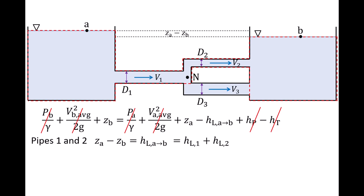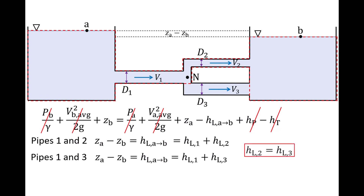If instead we drew a control volume for the fluid traveling through pipe 1 and the bottom branch, pipe 3, the resulting expression would be similar. We would find that ZA minus ZB equals HL1 plus HL3. Comparing these two equations, the head losses in the two branches are equal.